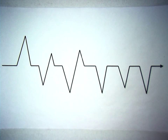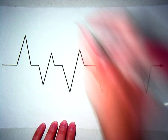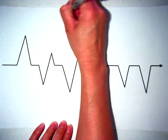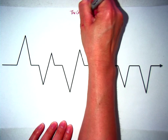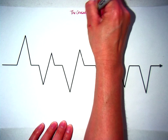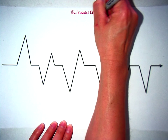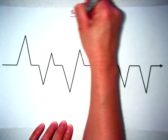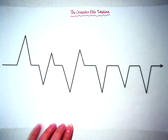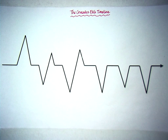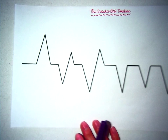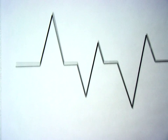It's actually modeled after the electrocardiograph machine which measures a heartbeat. Everything going up is something positive for the Christians, and everything going down is something negative for the Christians. Up at the top center of your paper, write the title: The Crusades EKG Timeline. Keep your writing small to make sure everything fits.